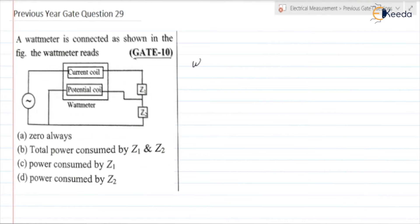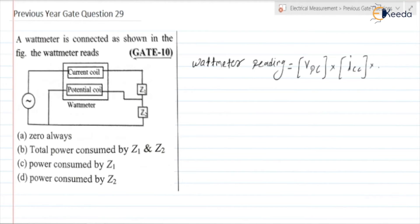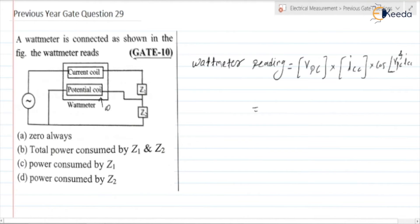As we know, the watt meter reading equals voltage across the pressure coil, into current flowing through the current coil, into cosine of the angle between VPC and ICC. Here the current coil is in one branch and the potential coil in another. If we neglect the current flowing through the potential coil — treating its resistance as infinite — then the current flowing through Z1 equals ICC, the same current flows through Z2.